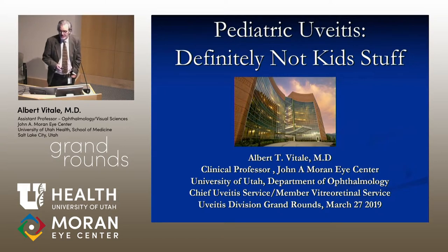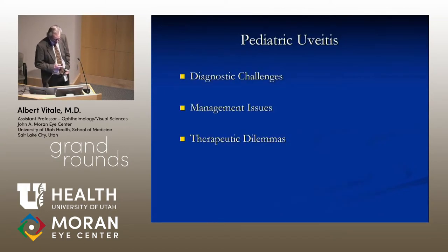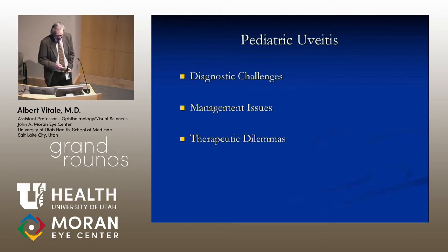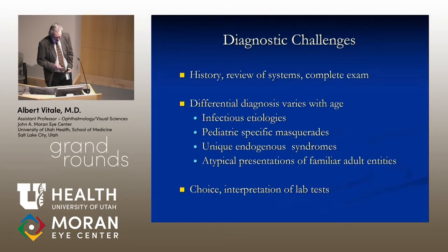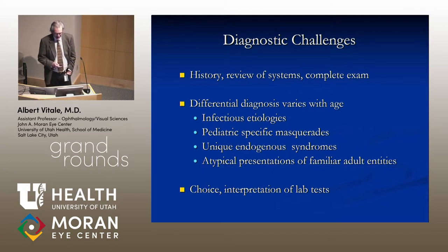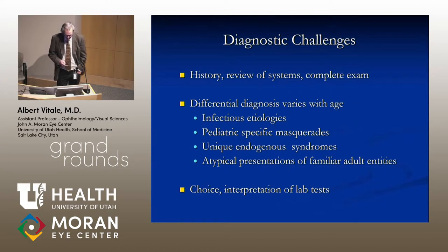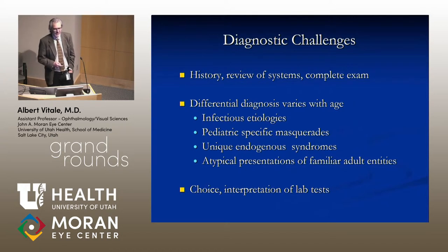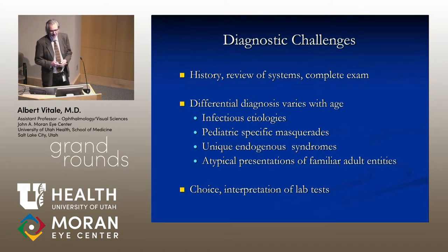Pediatric uveitis scares everybody because it's in kids. It is a subject that deserves special attention because of the unique diagnostic management issues and therapeutic dilemmas inherent in this population. A history, review of systems, and complete examination can be really difficult to obtain in a pre-verbal child. The diagnosis varies with age, with an over-representation of infectious etiologies, pediatric-specific masquerade syndromes such as retinoblastoma and leukemia, unique endogenous syndromes such as JIA-associated iridocyclitis and Kawasaki's disease, and atypical presentations of familiar diseases in adults such as sarcoidosis.